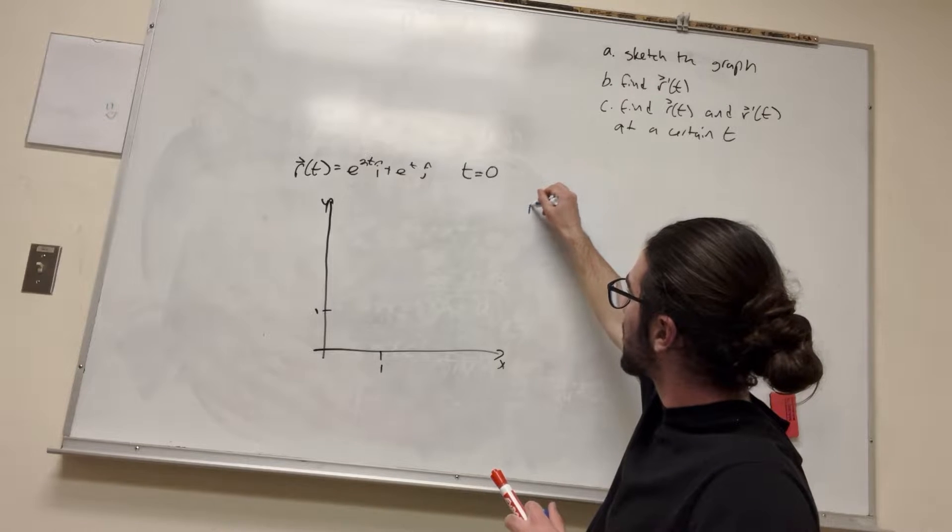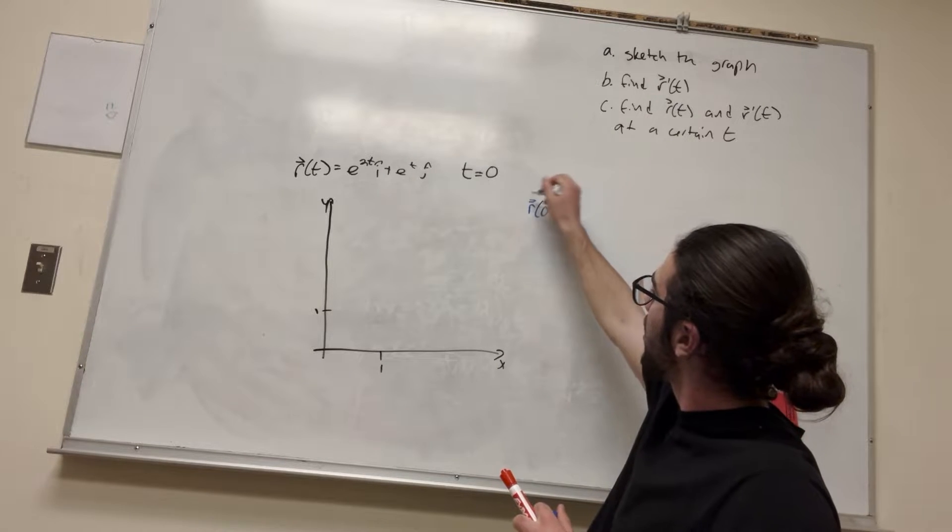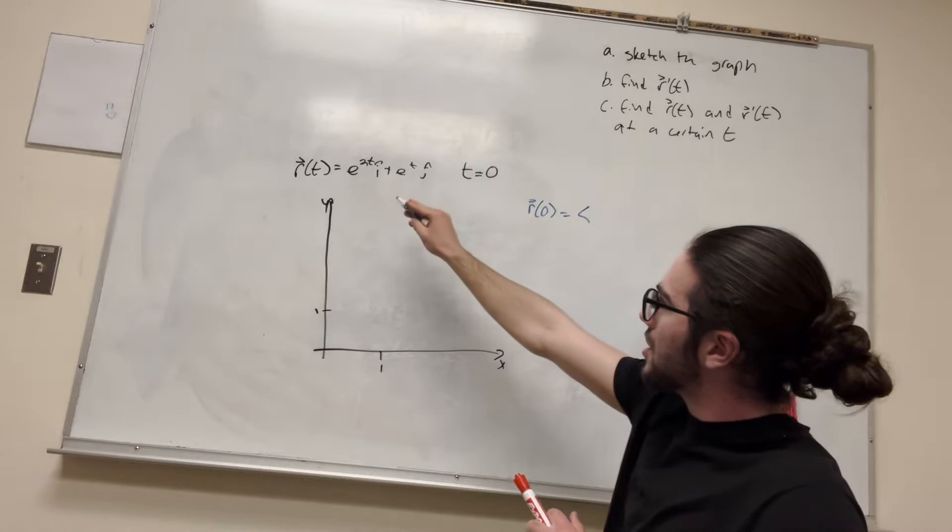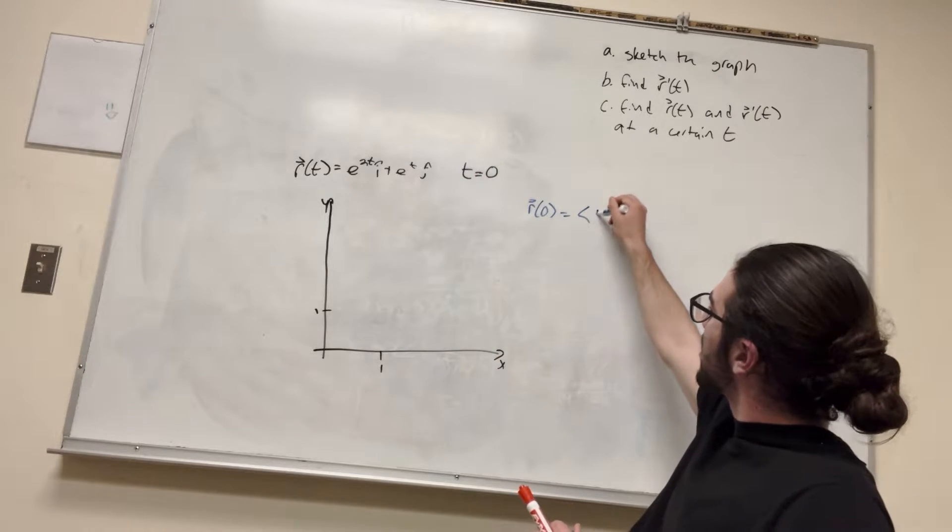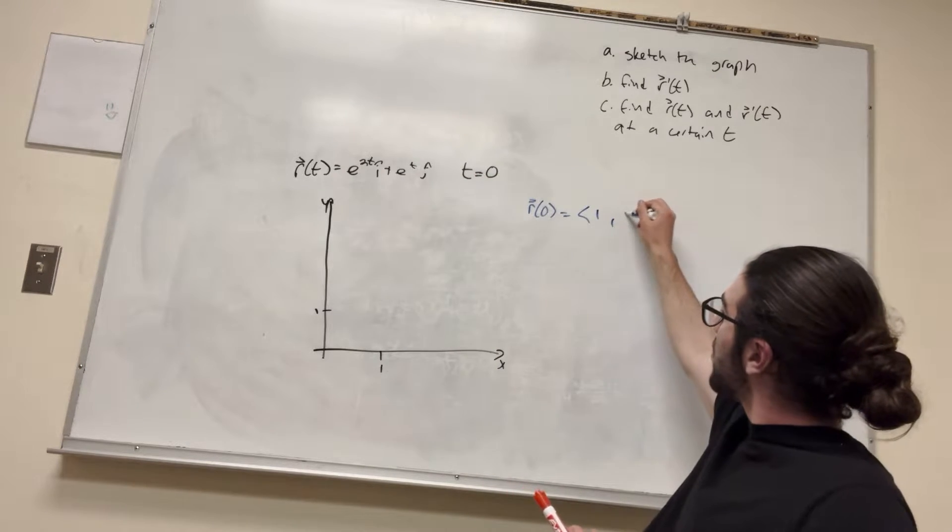Let's start at t is equal to 0. So r of 0 is equal to e to the 2 times 0. So it's going to be 1, because e to the 0 is 1, and then also e to the 0 is 1.